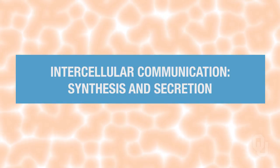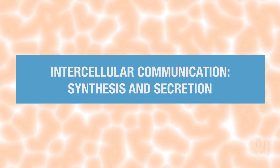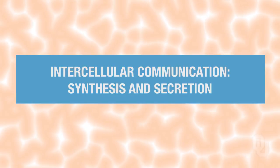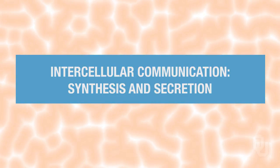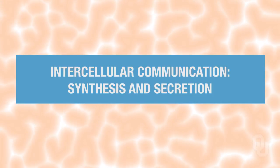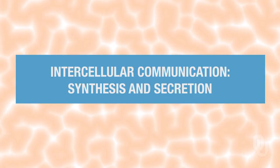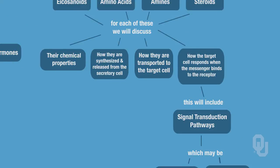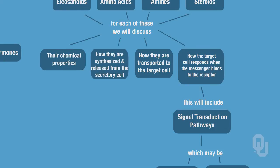We are now moving into the chemical classification we've been discussing, and we're going to look at the synthesis and release of your chemical messengers. This is going to rely on you remembering those five major classes of chemical messengers. We've already discussed the chemical properties and the five classes, and now we're going to look at how they are synthesized and how they get secreted or released from your secretory cell.